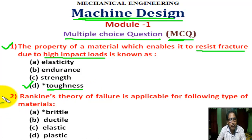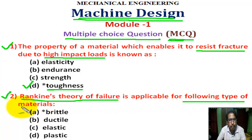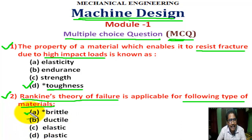Question number 2: the Rankine theory of failure is applicable for the following types of materials. There are 4 options. The correct answer is A: Brittle material.